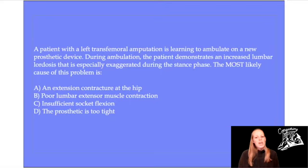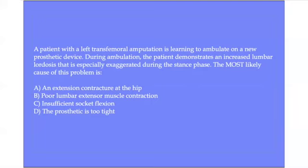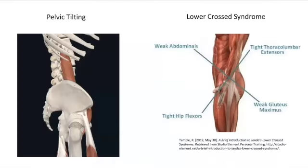What happens if we can't flex our hip during gait, especially during the stance phase? Throughout gait, the hip has to be able to do both flexion and extension. If the hip can't flex because we have insufficient socket flexion, then the body will have to compensate somehow. If we think about our pelvic tilting or even lower crossed syndrome, an anterior pelvic tilt is associated with hip flexion and tightness of the hip flexors, and also with lumbar lordosis. Whereas a posterior pelvic tilt is associated with hip extension or tightness of the hip extensors and flexion of the lumbar spine.